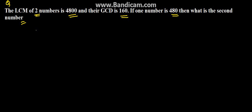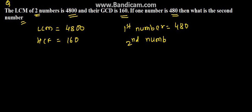Here we have been given that the LCM is 4800 and the HCF, that is GCD, is given to be 160. We have also been given that the first number is 480, and we need to find the second number, which let us consider as N.